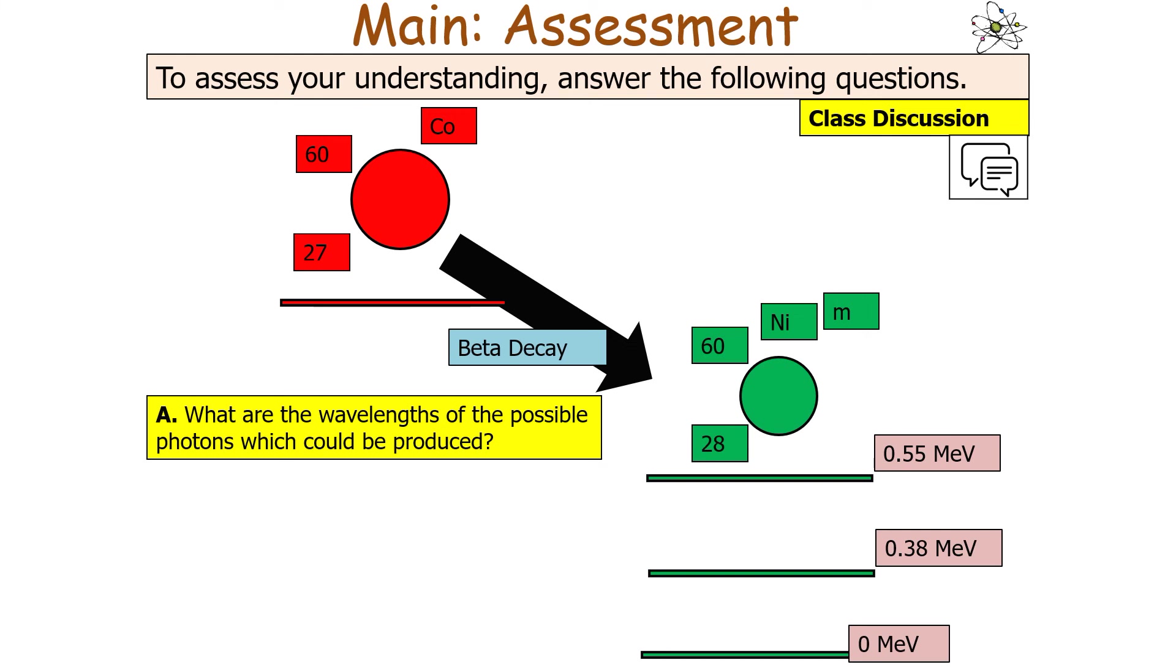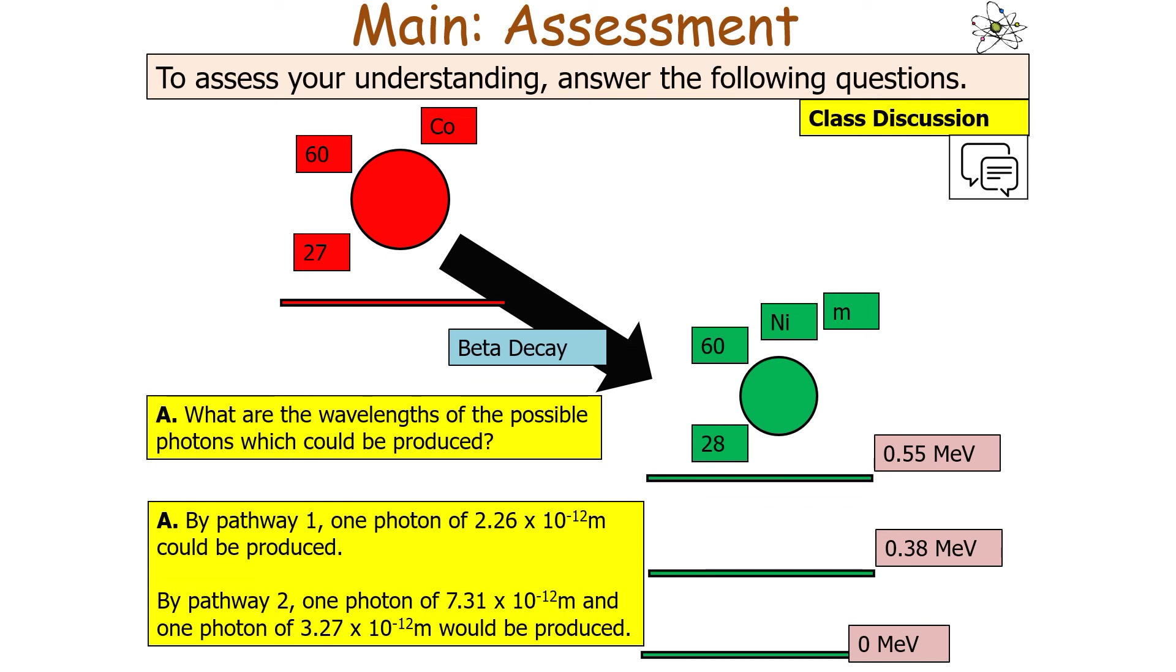A more challenging question could ask you to work out the wavelengths of photons which could be possibly produced, which links us back to particles and radiation. Pathway 1 would produce one photon of 2.26 times 10 to the minus 12 meters. You would say E equals HF, convert that into joules, work out the frequency in hertz, then use the equation C equals F lambda, where C is 3 times 10 to the 8 meters per second, to work out lambda.